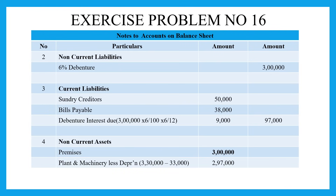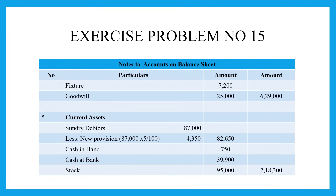On the assets side, non-current assets include: premises at 3,00,000 rupees; plant and machinery less depreciation, giving 2,97,000 rupees; fixtures at 7,200 rupees; and goodwill at 25,000 rupees. The total non-current assets come to 6,29,000 rupees.